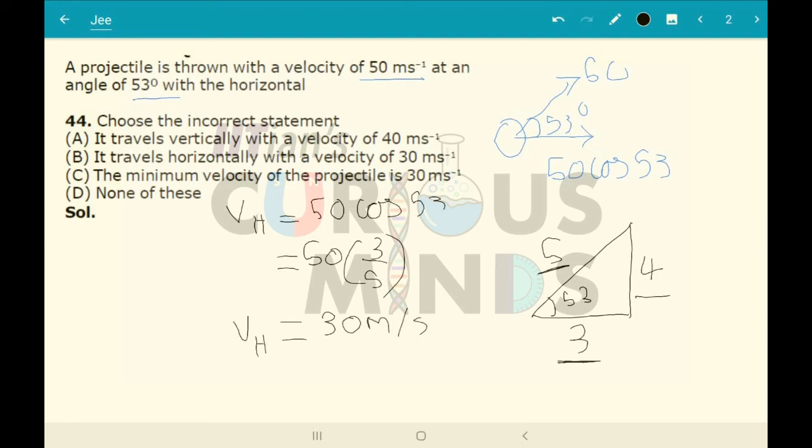Velocity in horizontal is equal to 30 meter per second, which remains constant. So it travels horizontally with a velocity of 30 meter per second, which remains constant.